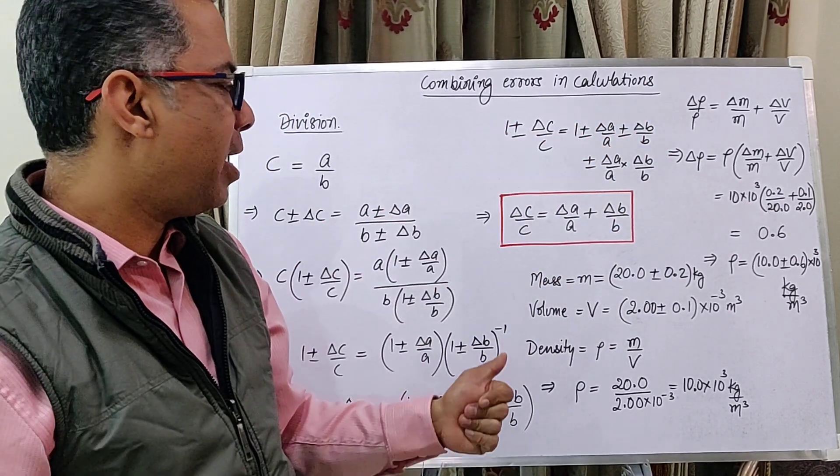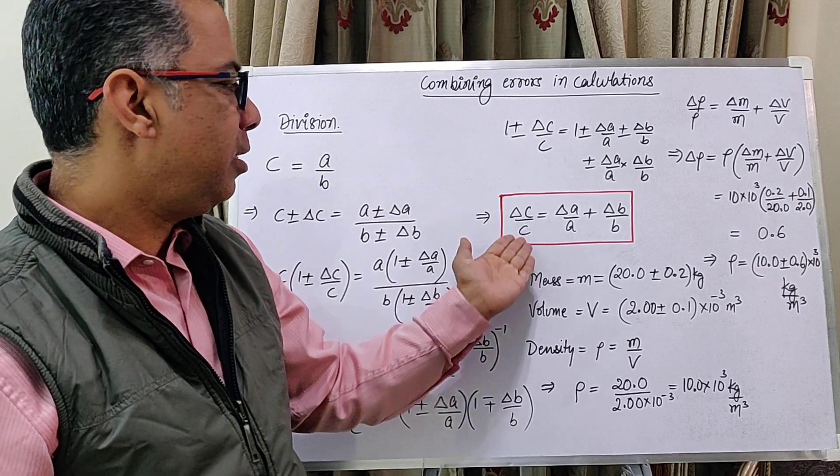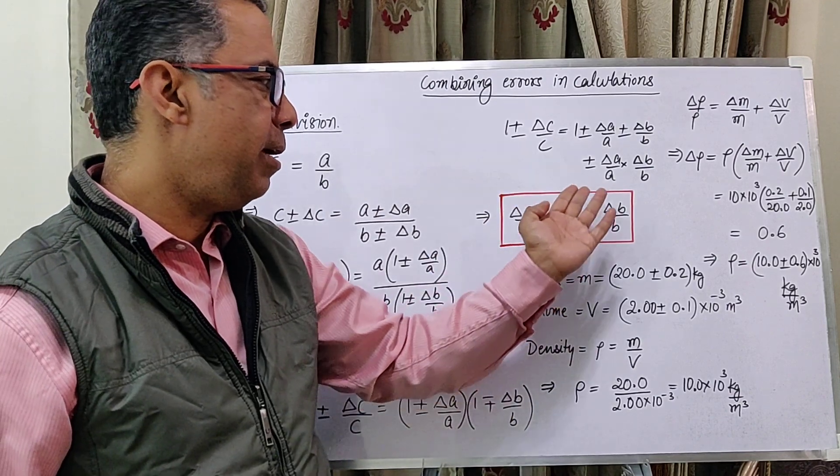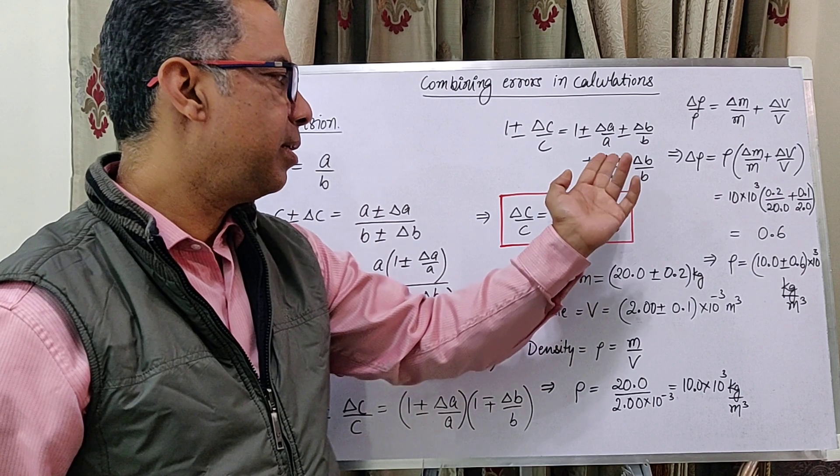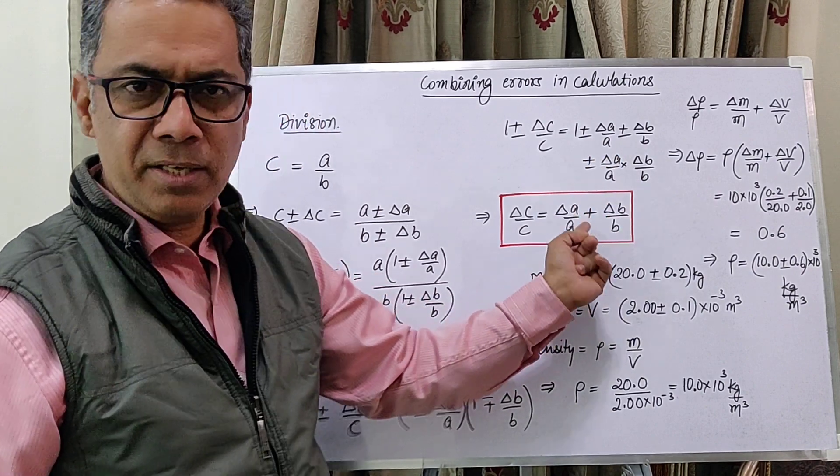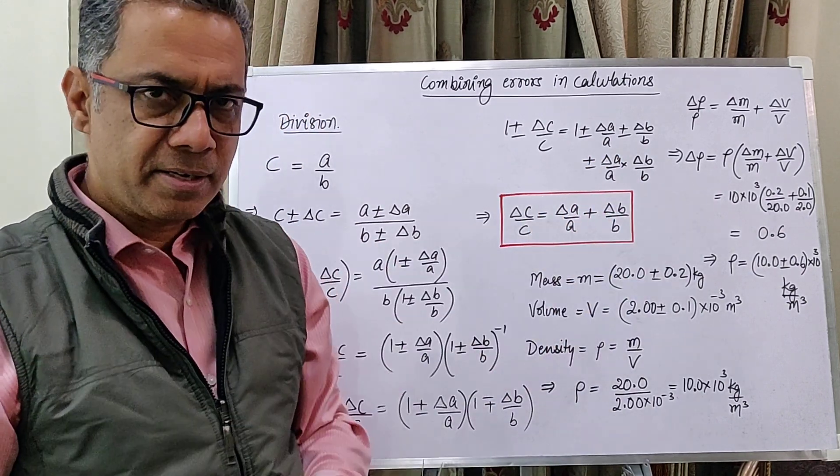After a cancellation of 1 on either side, we have delta C by C equals delta A by A plus delta B by B. No minus here. We always add errors.